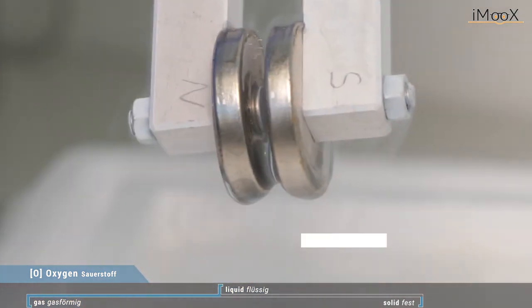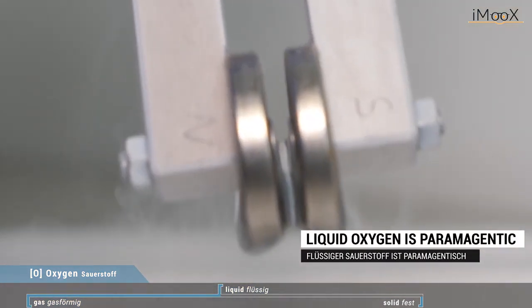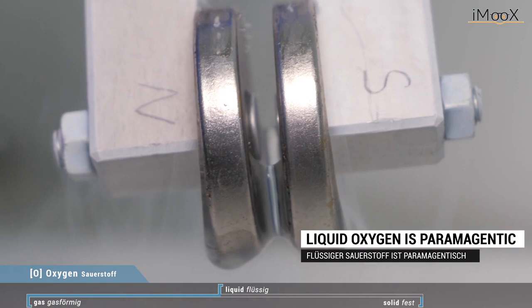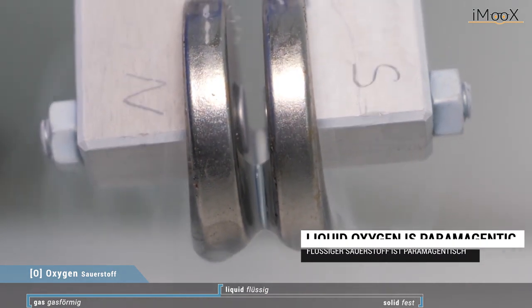Here we show that the liquid oxygen is paramagnetic. Again, you see it's bluish and it's held by the magnets.